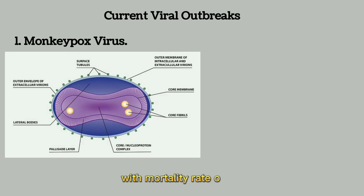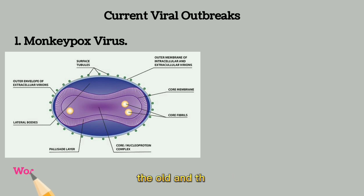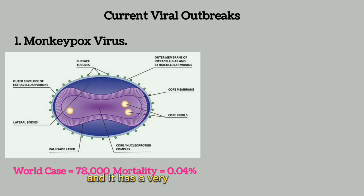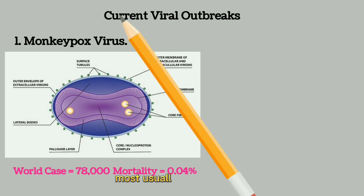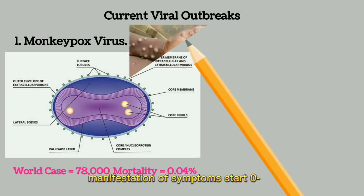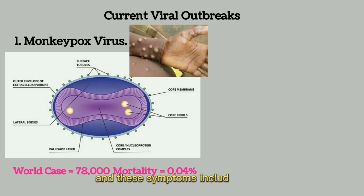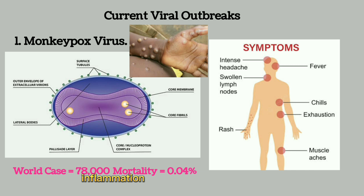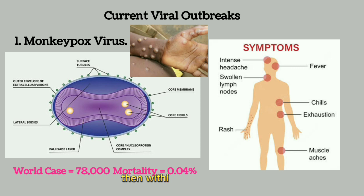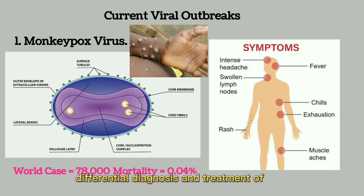Monkeypox has a mortality rate of 0.04 percent. It can affect males and females, the old and the young, and it has a very short infectivity period — most usually between zero to five days. Manifestation of symptoms starts from zero to three days and includes headache, inflammation of the lymph nodes, body pain, and fever. Within three to five days, there is manifestation of rashes and pustules. Diagnosis and treatment of monkeypox virus are available and in progress.